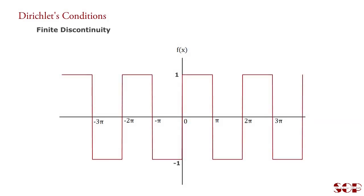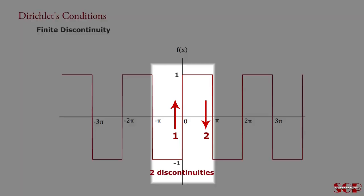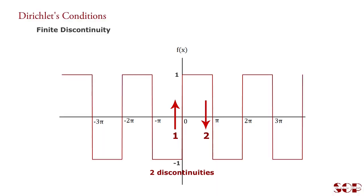Finite discontinuity. In this figure, the function f(x) is discontinuous because the function jumps at point x = 0 from -1 to 1, and it jumps at point x = π from 1 to -1. It means the function is not continuous. There are two discontinuities in the interval -π to π. That is, the function has a finite number of discontinuities.